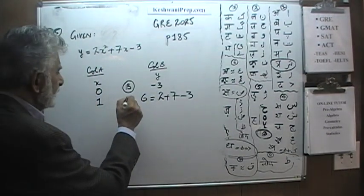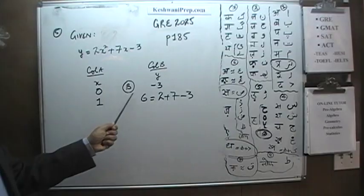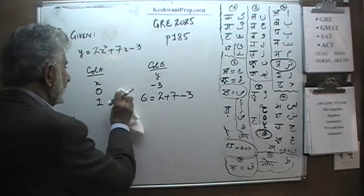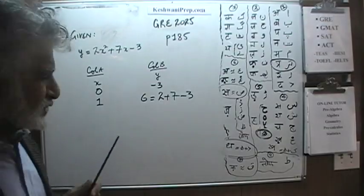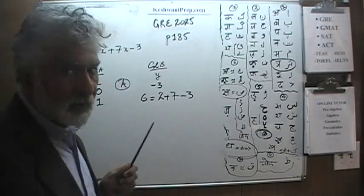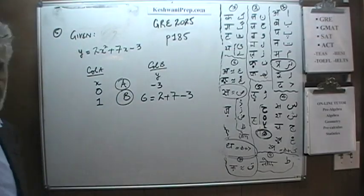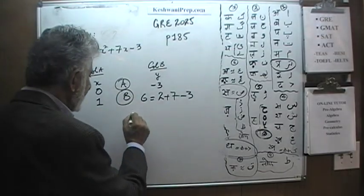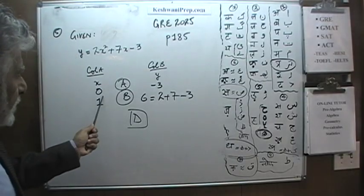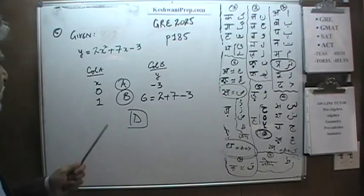As you can see, now the answer switches. Before x was 0 — 0 is bigger than negative 3 — and now it's 1 versus 6. Since the answer switches between the two cases, the correct answer is D.